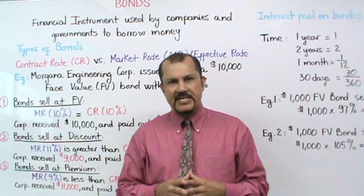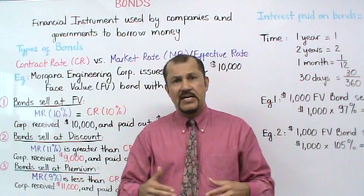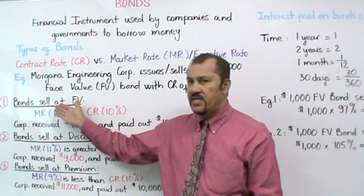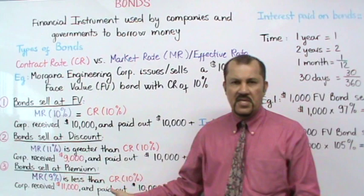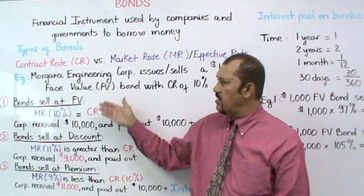The relationship between these two rates — the market rate and the contract rate — determines whether a bond sells at face value (scenario one), at a discount (scenario two), or at a premium (scenario three). Let's look at each of these scenarios in a little more detail.